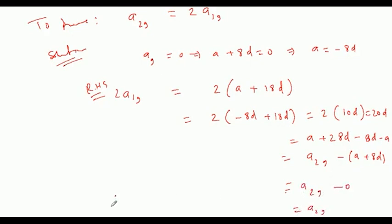तो हमने प्रूव कर दिया. Therefore, A₂₉ equal है 2 times of 19th term.